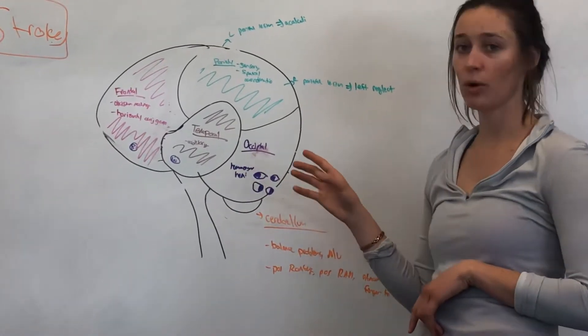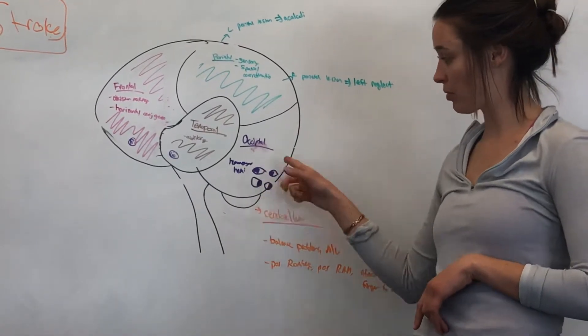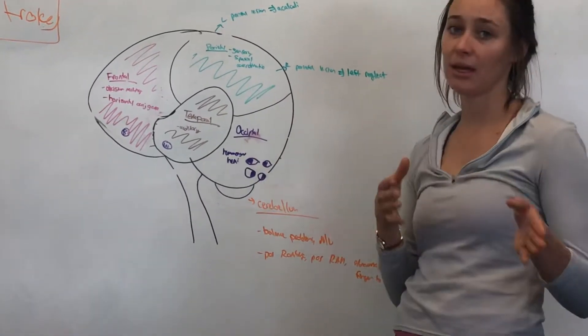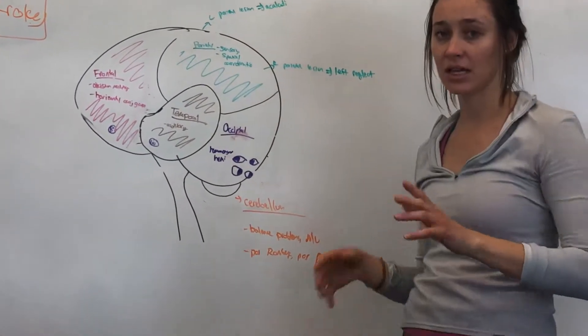So what that is, homonymous, homo, same, same side versus hetero. So both left or both right. And then hemianopsia, hemi, you can't see half of your vision field. So if you can't see half the left side or half the right side of things, like I could see the right side of the room.